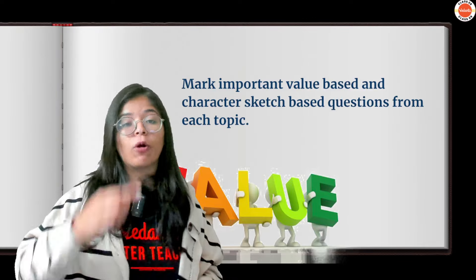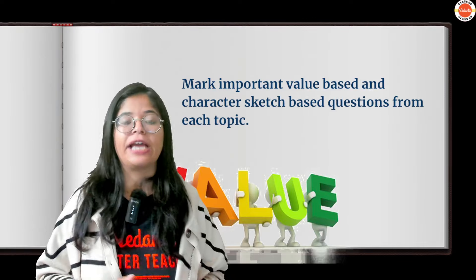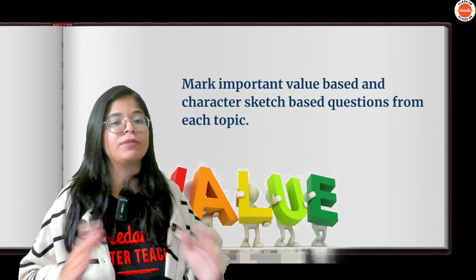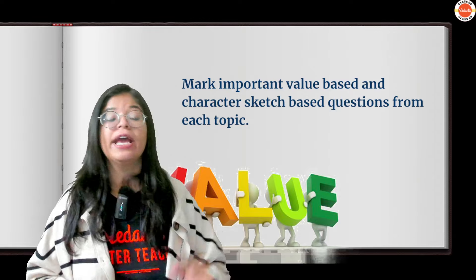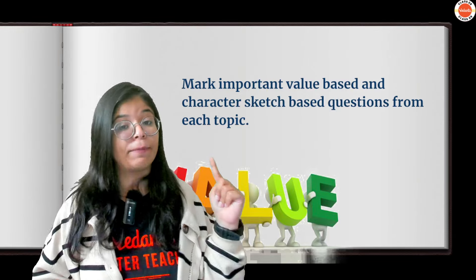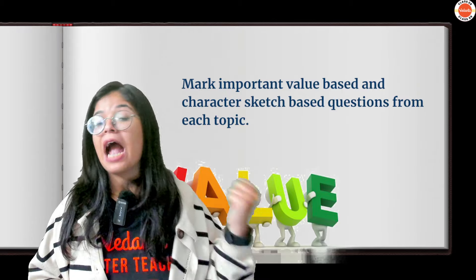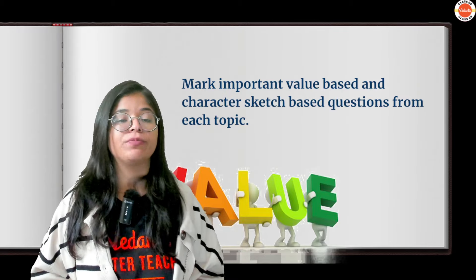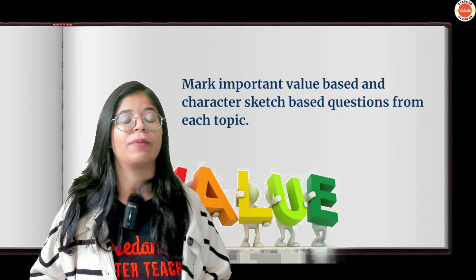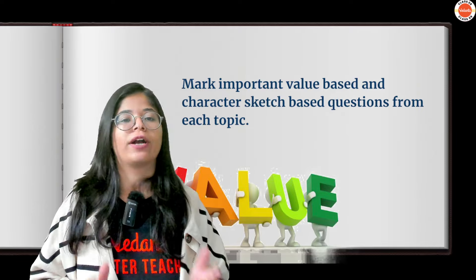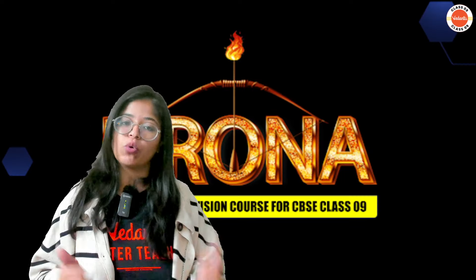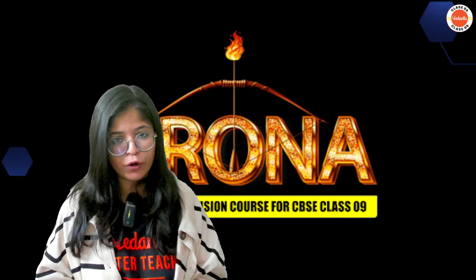The only real challenge in literature is doing well in long answers. So please follow all 5 steps diligently if your goal is to score 40 on 40 in your English exam. If you follow these steps correctly, I bet no one can stop you from scoring 40 on 40. Start following these steps right now. And if you want to use ready-made notes, join Drona — it's the perfect option for you.